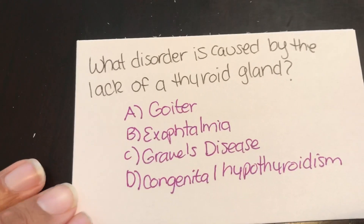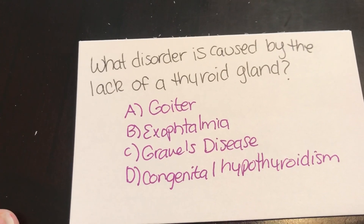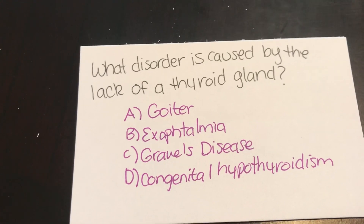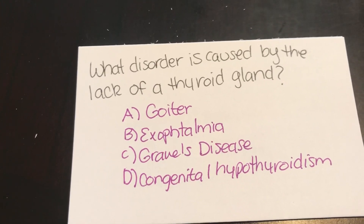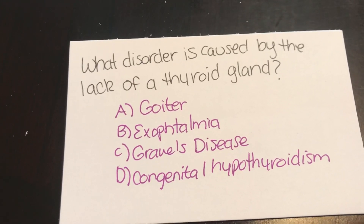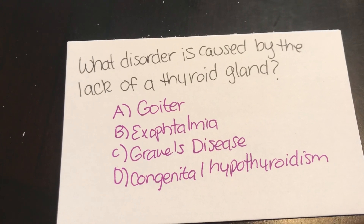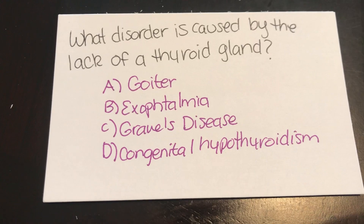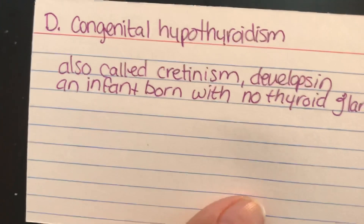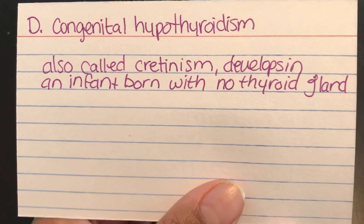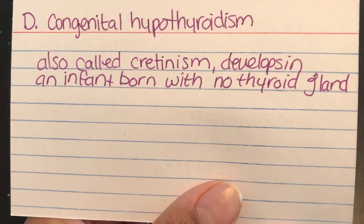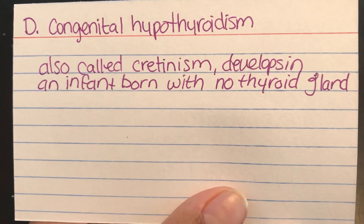Which disorder is caused by the lack of a thyroid gland? A, a goiter. B, exophthalmic. C, Graves' disease. Or D, congenital hypothyroidism. Answer: D, congenital hypothyroidism, which is also called cretinism, and develops in an infant born with no thyroid gland.